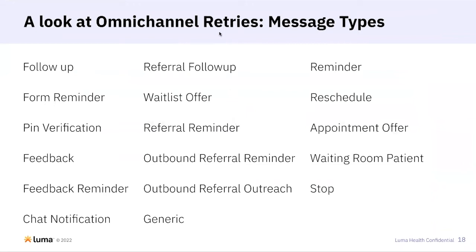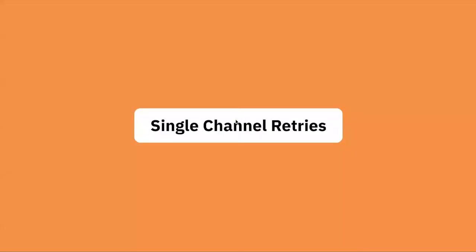These are the different message types that we support. When configuring your account, we'd recommend that you enable all of them for products that you use. As mentioned, broadcast is not included. This is generally just a list of all of the products that we send messages for. We're going over omnichannel retries, which is kind of the more advanced version of the single channel retries concept.